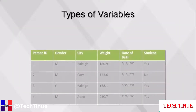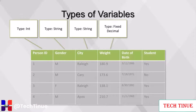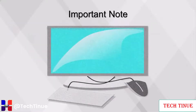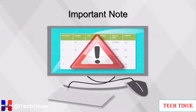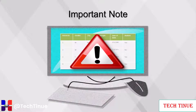Here are the variable types for our table. Person ID is a discrete numeric variable. Gender and city are string variables. Weight is a fixed decimal variable. Date of birth is a date. Student is boolean. Software packages can automatically assign fields with data types, and sometimes these can be assigned incorrectly. Examination of these data types is necessary to ensure proper utilization further downstream. Sometimes data formats require advanced data transformation and extraction techniques, such as dates having varying formats that can be interpreted as strings.